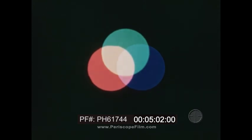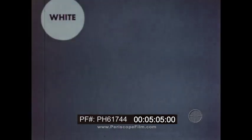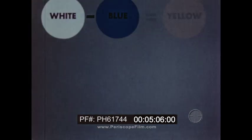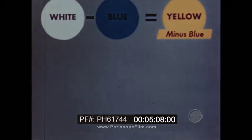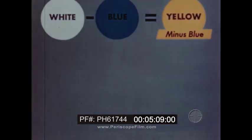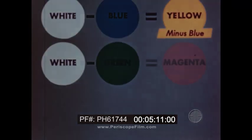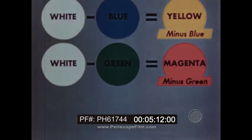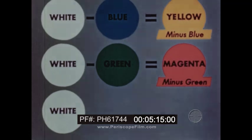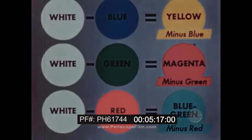The complementaries of the three primary colors are sometimes called minus colors. White minus blue is yellow, or minus blue. Magenta is minus green. And blue-green is minus red.